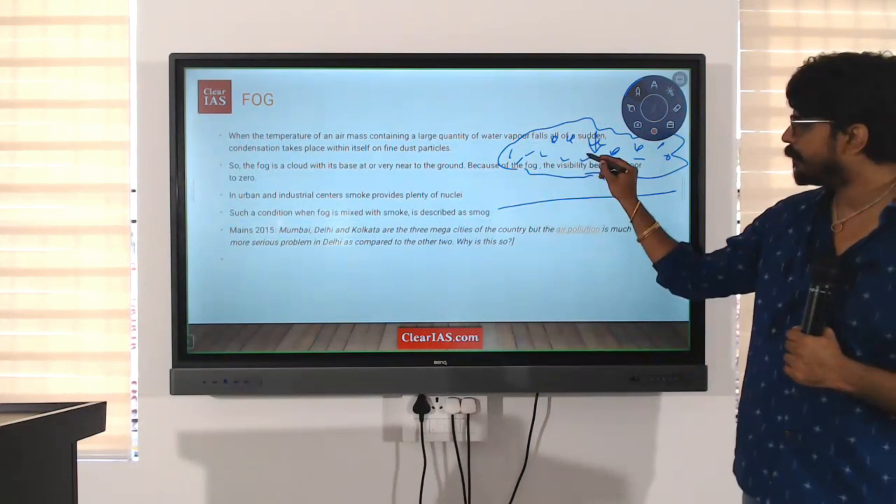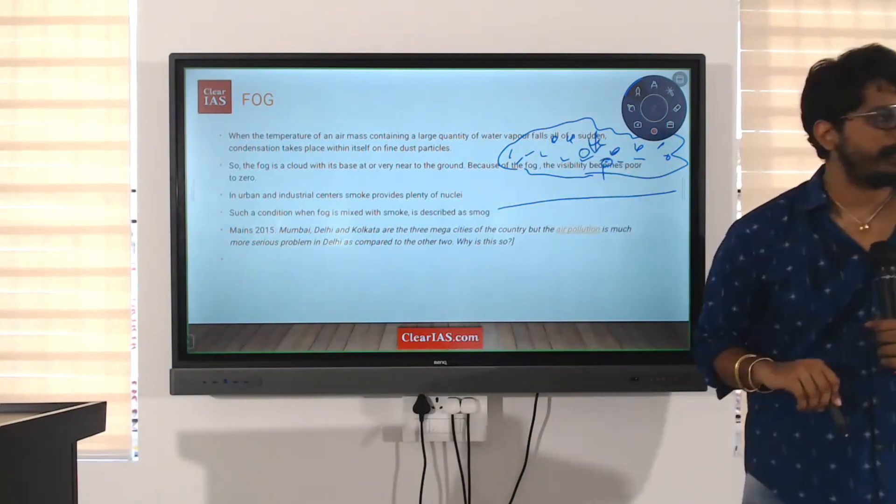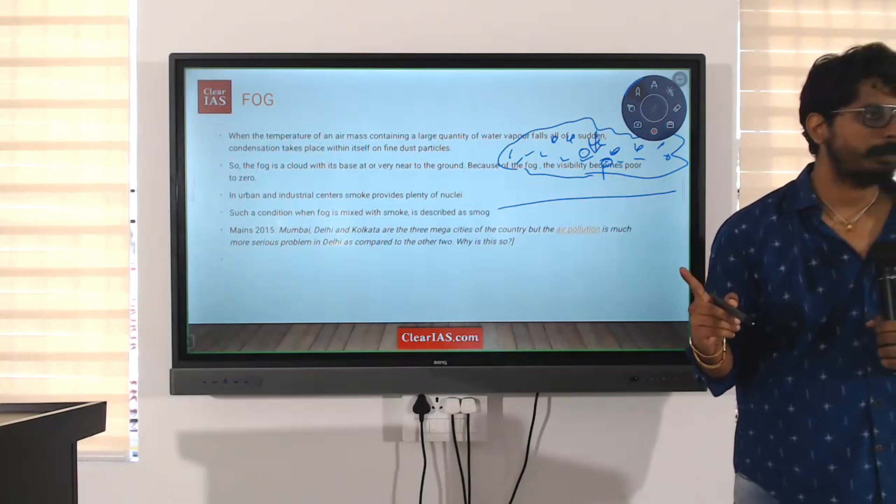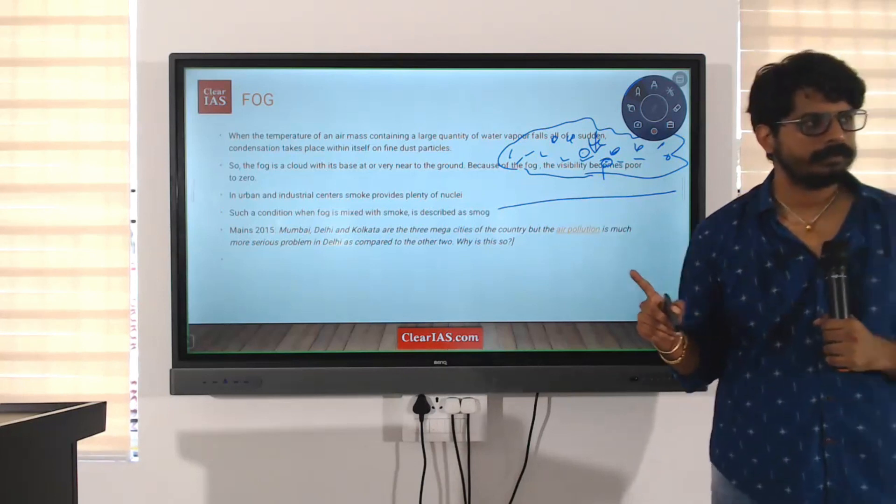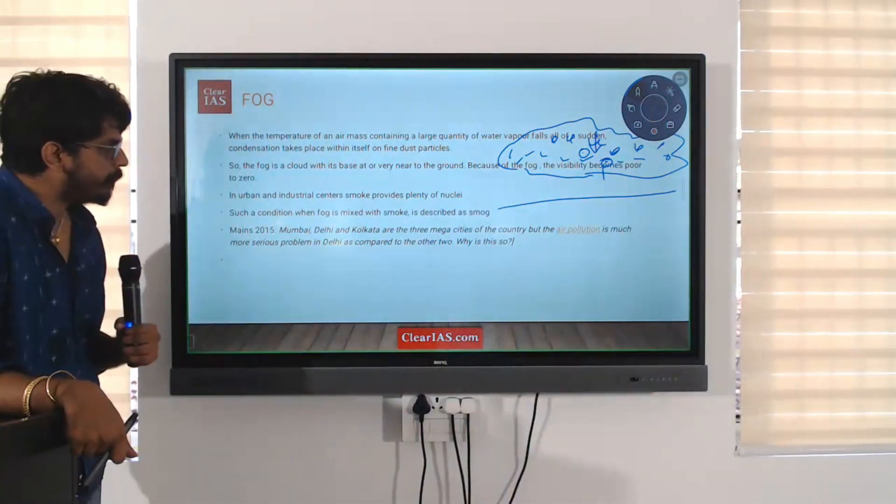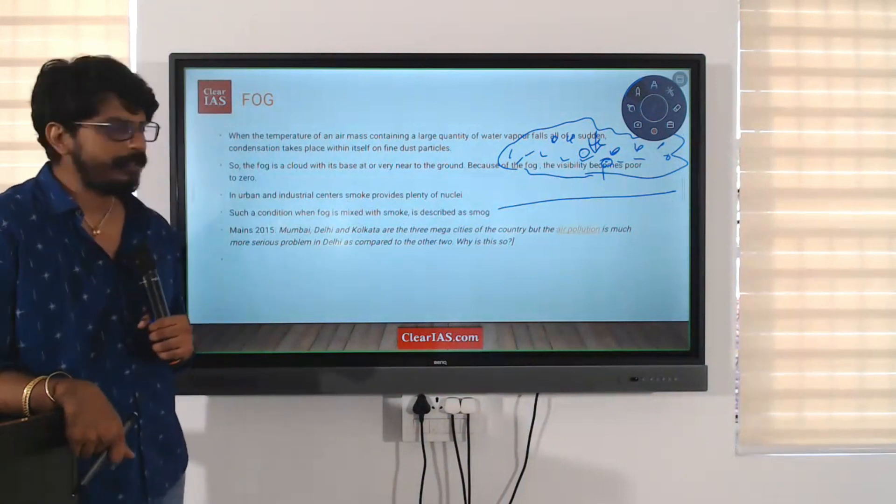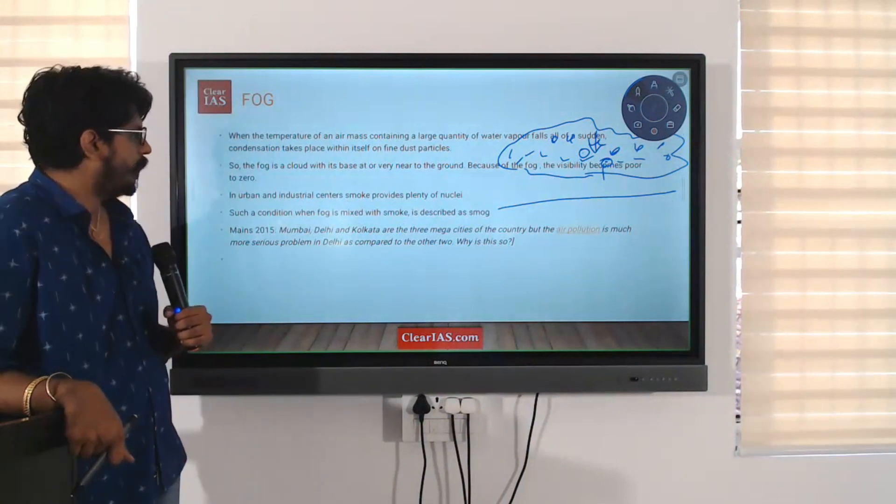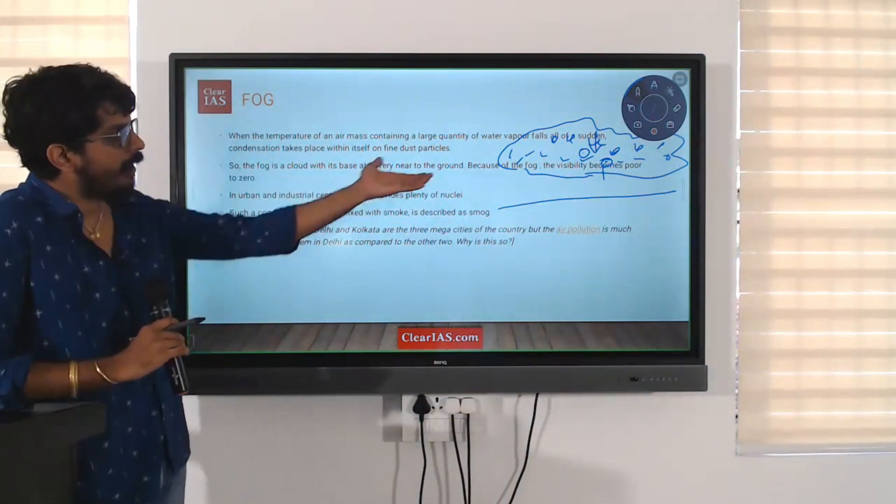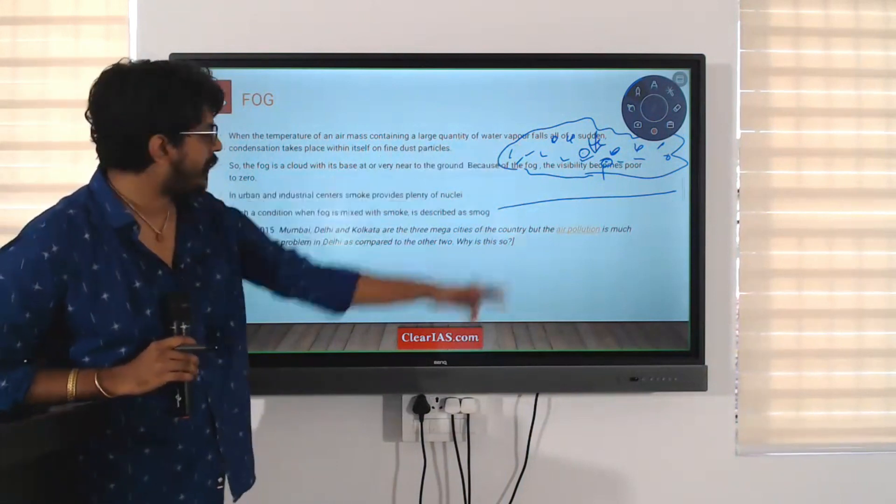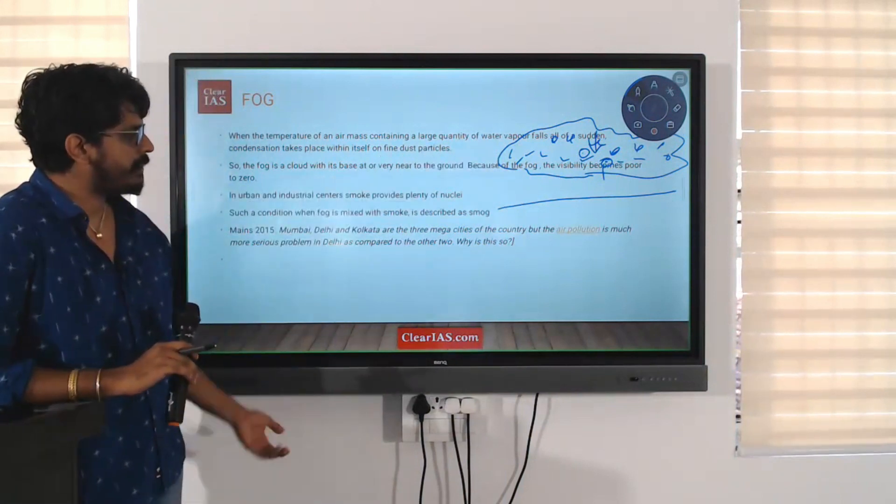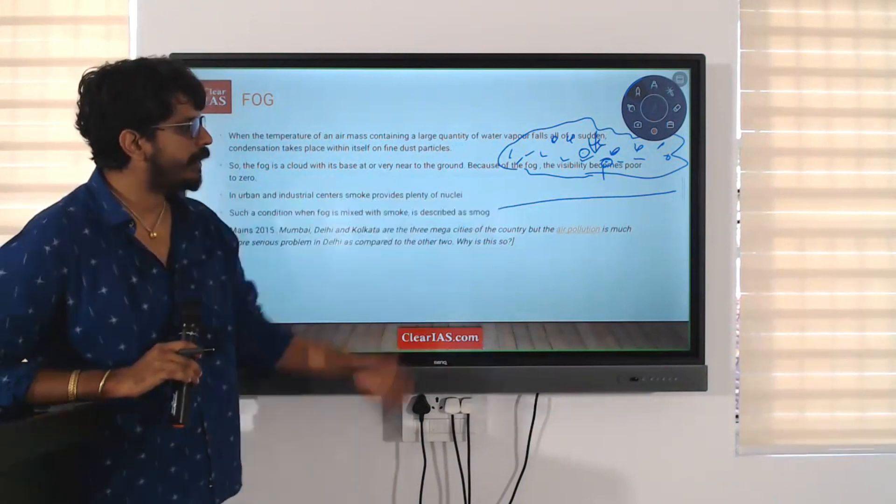Here the condensation would happen on hygroscopic nuclei, not like the dew. Condensation takes place within itself on fine dust particles. So, the fog is a cloud. Fog is like a cloud with the base at or very near to the ground.